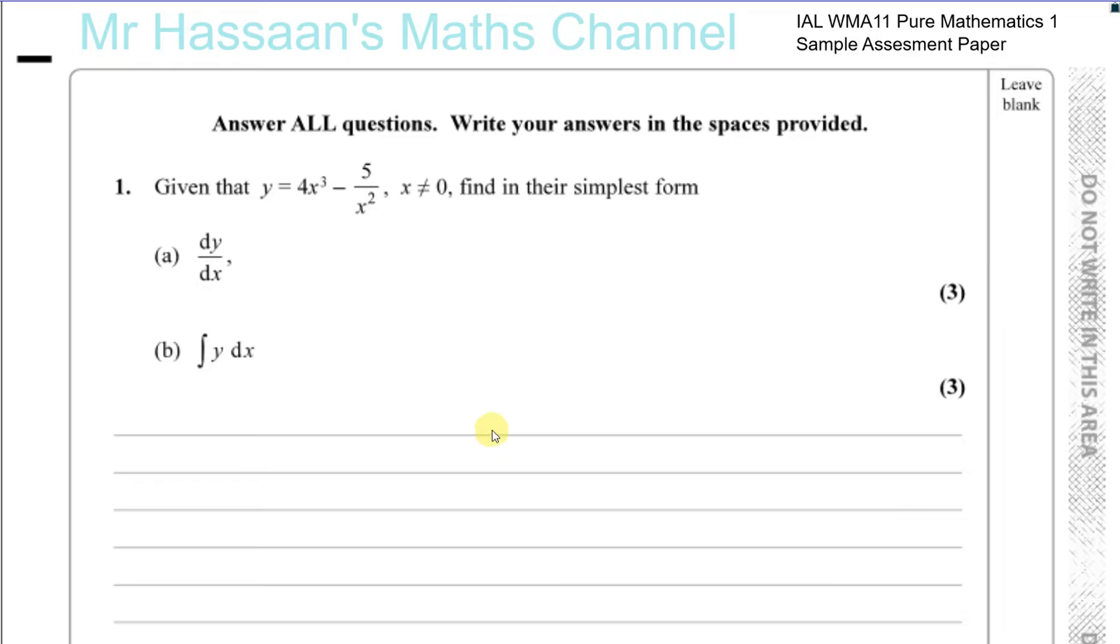Okay, so for question number one, part A, we're asked to differentiate this expression that's been given to us. We've got y equals 4x cubed minus 5 over x squared, and of course x cannot be 0, otherwise it will be undefined, the denominator will be 0. Find in the simplest form dy/dx.